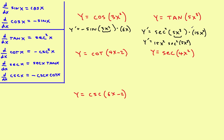Let's try this one. Y prime: the derivative of the cotangent is the negative of the cosecant squared. So negative cosecant squared — that's the derivative of the outer part. Then rewrite the original inner part. Then take the derivative of what's on the inside, which is 4. And again, if you want to, you can move the 4 out in front.